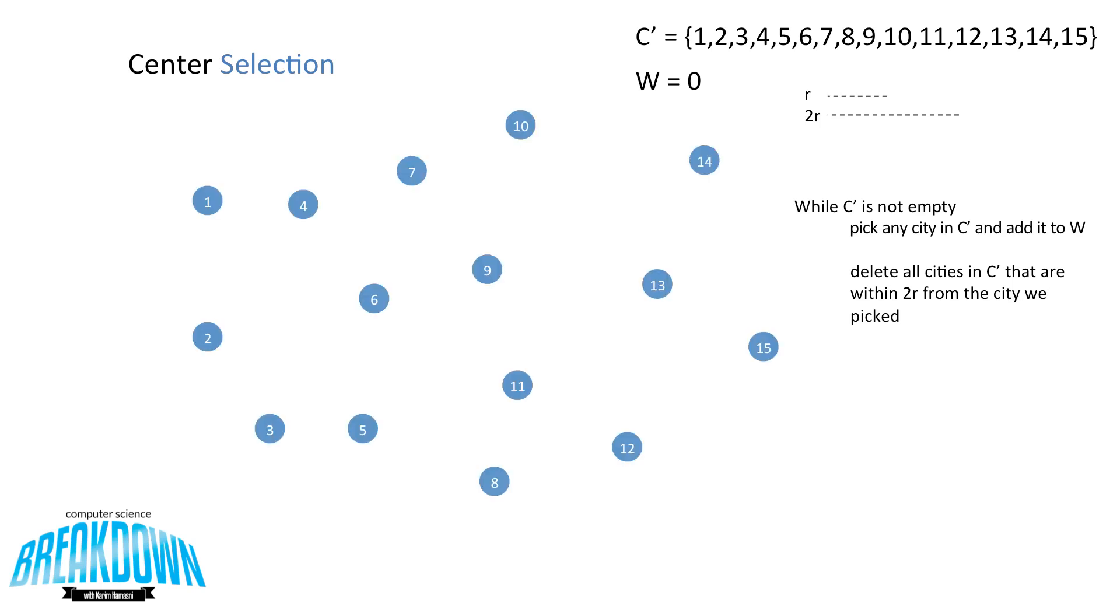So let's say these are cities, cities 1 to 15. So while c is not empty, we pick any city in c' and add it to w. This will be our first warehouse placement. Then we want to delete all the cities in c' that are within 2r, so two times the radius, from the city that we've picked to place our warehouse. So let's get started. Let's pick city number three. So I can remove three from c' and add it to w. So now that the three is picked, I want to draw a circle that is 2r in radius around it. So the cities 2 and 5 fall within this radius circle, so we can now remove them from c'.